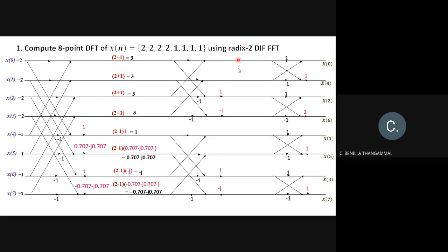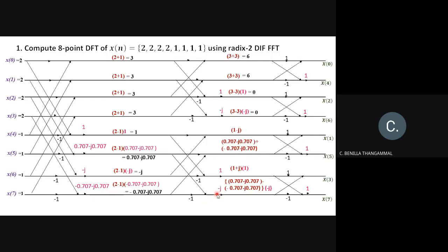Stage 2 calculations using stage 1 outputs. First pair (3,3): 3+3=6, (3−3)×1=0. Second pair (3,3): 3+3=6, (3−3)×(−j)=0. For the pair (1, −j): 1+(−j)=1−j, (1−(−j))×1=1+j. For the pair (0.707−j0.707, −0.707−j0.707): sum gives imaginary result −j1.414; difference ×(−j) gives −j1.414. Stage 2 outputs: 6, 6, 0, 0, 1−j, 1+j, −j1.414, −j1.414.